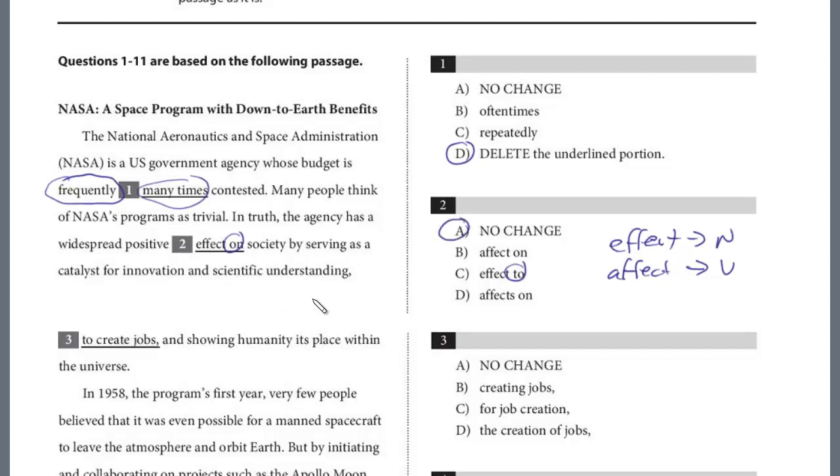And question three, we read this earlier. We've got serving as a catalyst for innovation and scientific understanding to create jobs and showing humanity its place within the universe. So we have serving, we have a comma, to create, and then we have and showing after the Oxford comma with the and. This is parallel structure. Serving, showing, these are both participles. Why would we change it to an infinitive to create? It's not parallel. And so we just need creating jobs for that one, and it is B.